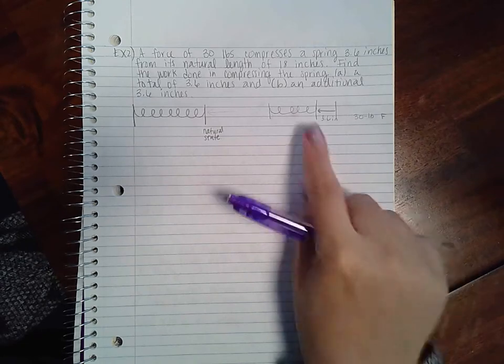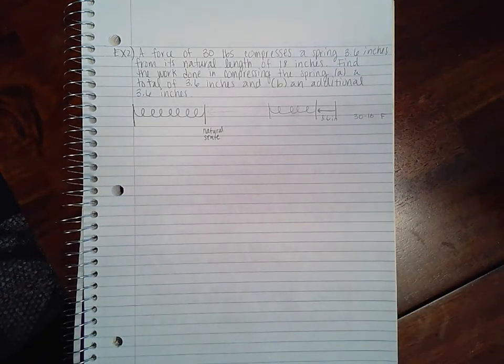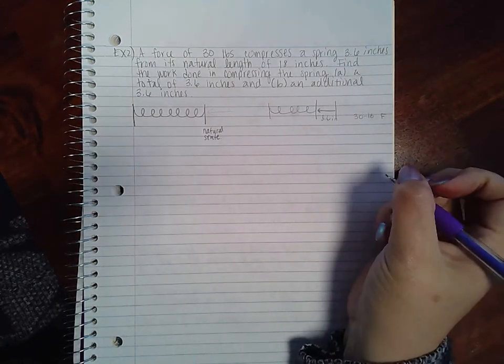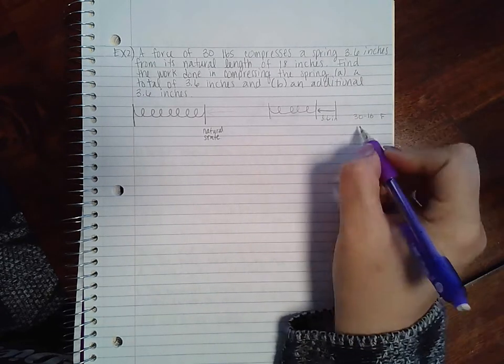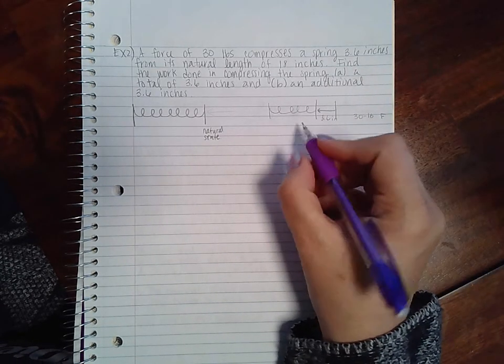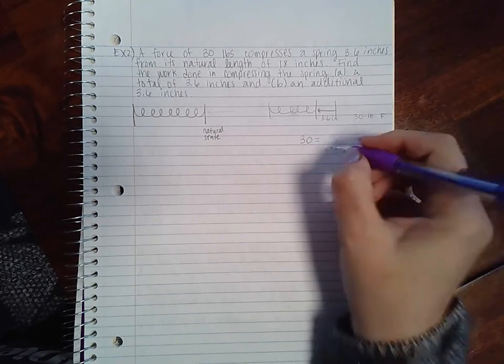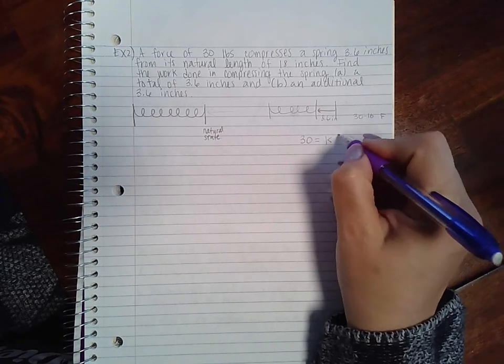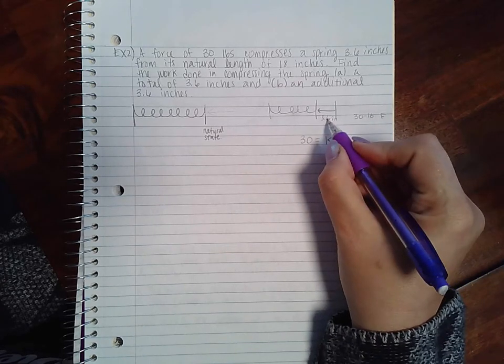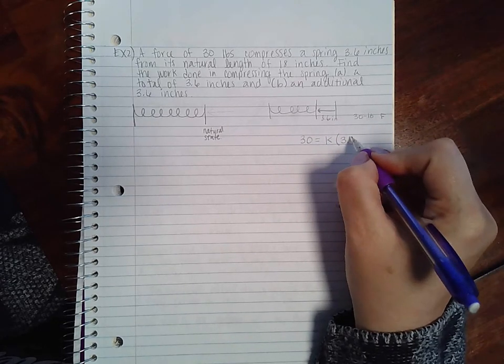So what that does is that allows me to figure out what the constant of proportionality is. I can say that the force, which is 30 pounds, is calculated by k times the distance, and the distance it moved was 3.6 inches.